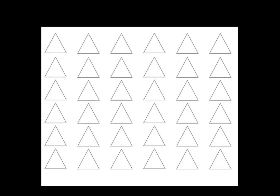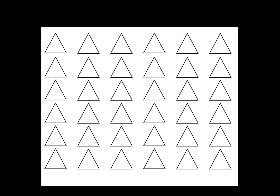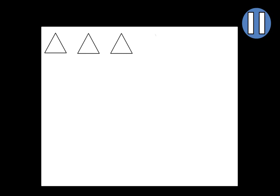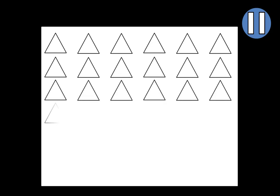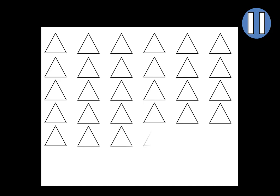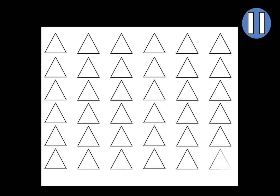The first step is to draw 36 empty triangles. Remember that you can pause the video whenever you like — if you want more time, simply click pause. We'll begin by drawing six triangles across the top: draw the first triangle in this corner, then the second, third, fourth, fifth, and sixth triangle here. You'll then draw a second row of triangles, a third row, a fourth row, a fifth row, and a sixth row. Go ahead and pause the video now until you have finished drawing your triangles.